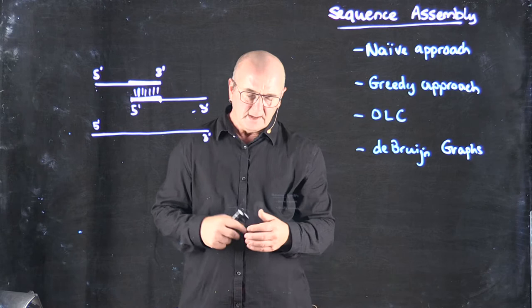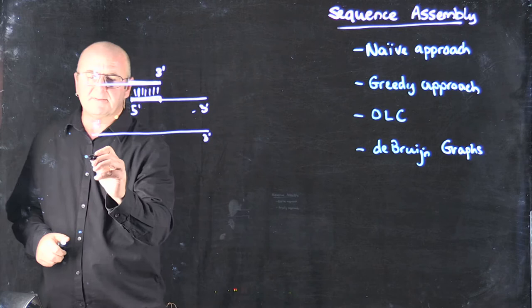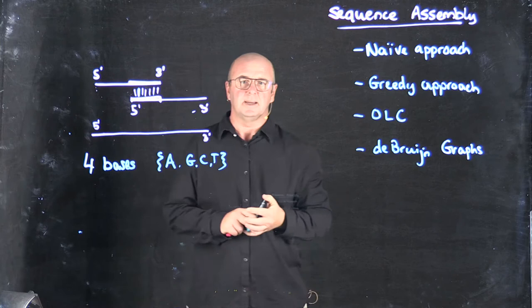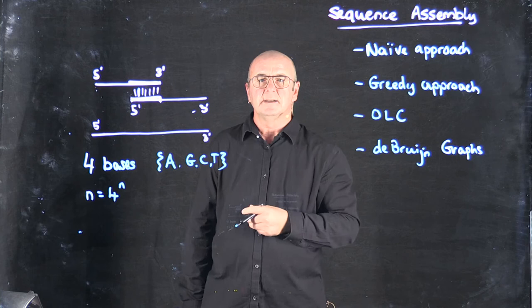But theoretically speaking, how long of a sequence would you need here to be unique in a genome? So remember that we've got four bases. Our alphabet consists of A, G, C, and T. And so if we have a fragment of length n, then there's basically 4 to the n possibilities of getting that fragment.